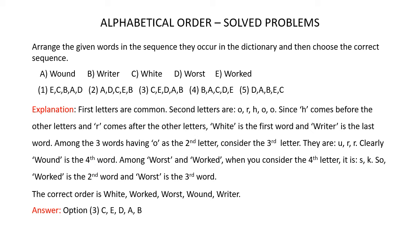Now you are left with Versed and Worked. Among these two words, WOR is common, so you have to consider the fourth letter: S and K. In the alphabet series, K comes before S. So Worked is the second word and Versed is the third word. When you arrange all five given words in alphabetical order, the correct order is White, Worked, Versed, Wound, and Writer. So the correct answer is option 3: C, E, D, A, B.